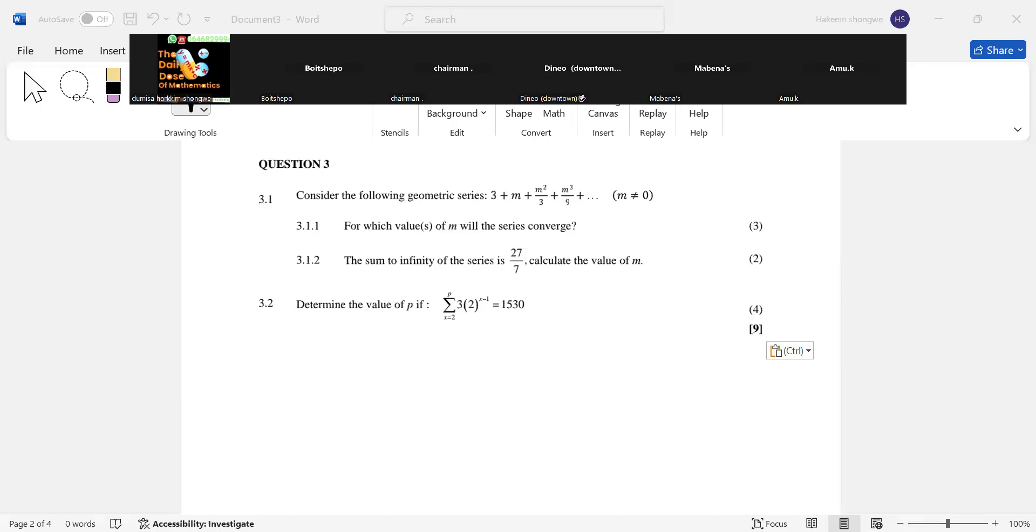They say consider the following geometric series: 3 + m + m² over 3 + m³ over 9 + dots. And then in point 1.1 they say for which values of m will the series converge.